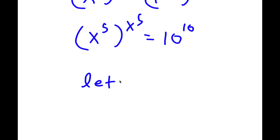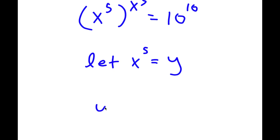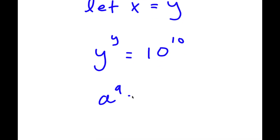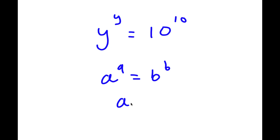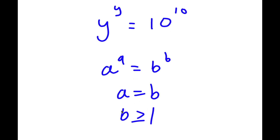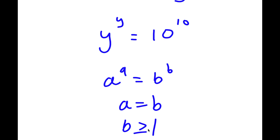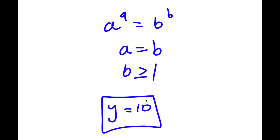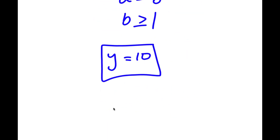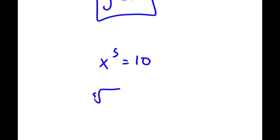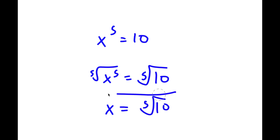Now I'm going to let x to the power of 5 equal to the variable y. So if I substitute, I get y to the power of y is equal to 10 to the power of 10. Now if I have something in the form a to the power of a equals b to the power of b, this means a equals b — but only if b is greater than or equal to 1. Since 10 is greater than or equal to 1, I can write y equals 10. Now, remember we set x to the power of 5 equal to y, so x to the power of 5 equals 10. Taking the fifth root on both sides gives x equals the fifth root of 10. So this is my answer.